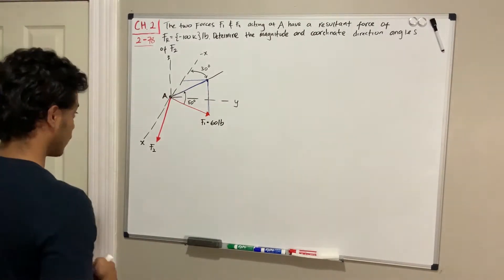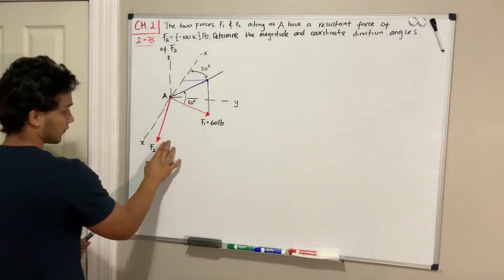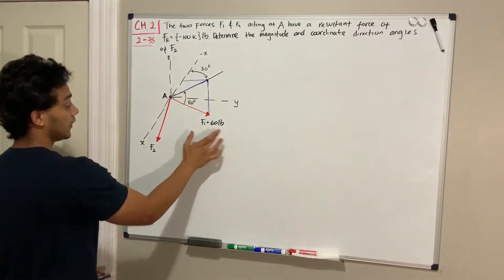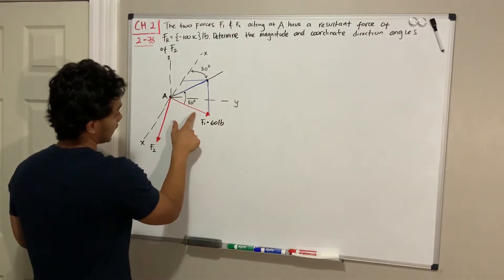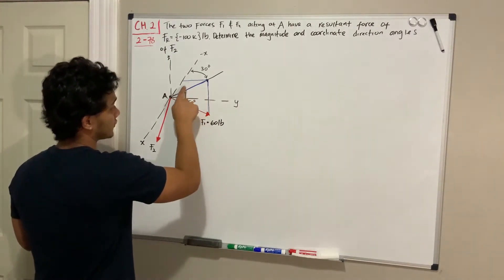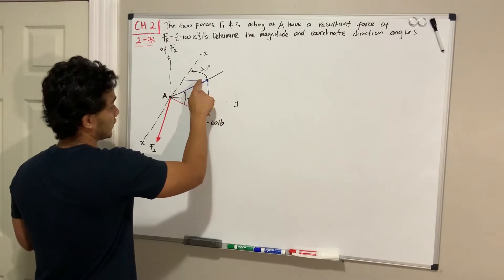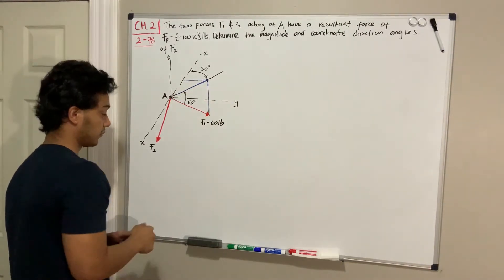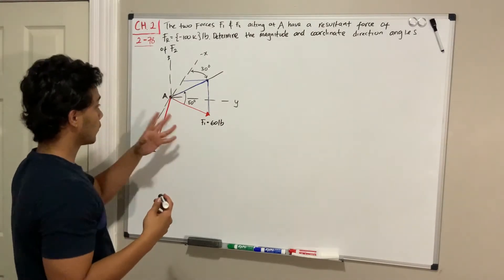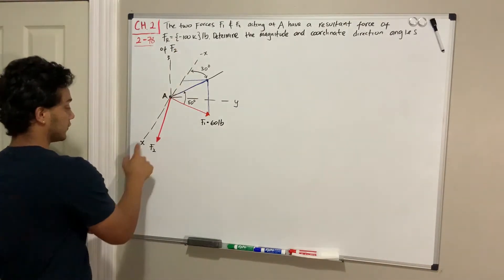Looking at the picture, they're giving us F2 but haven't given its values. We know that the addition of F2 and F1 will give us negative 100 in the z direction. F1 is 60 pounds in magnitude. They're also giving us the angle between the force and the xy plane, and the angle from the projection in the xy plane to the x-axis. We'll decompose F1 to find its x, y, and z values, then solve for F2 components.